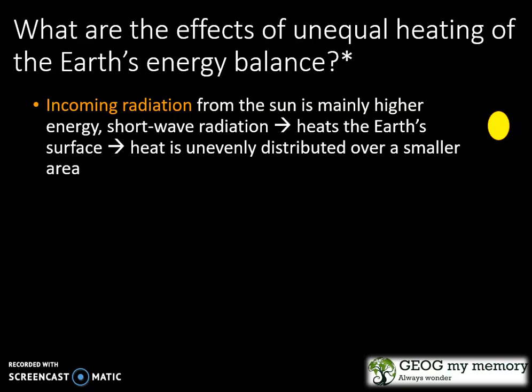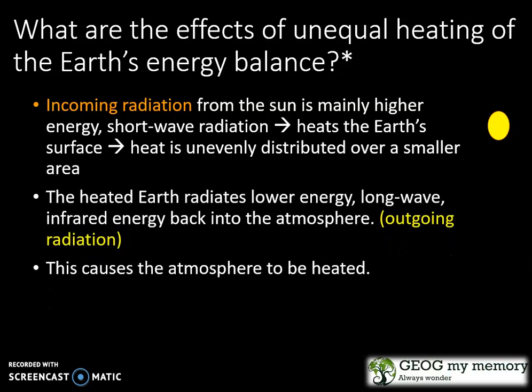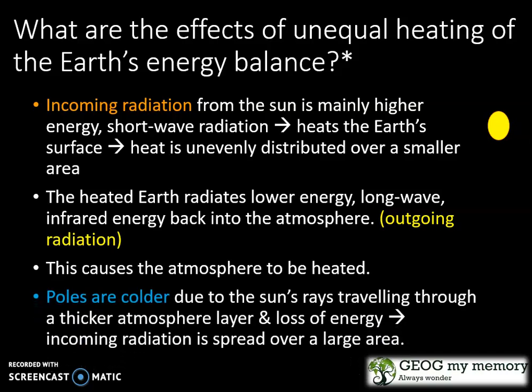What are the effects of unequal heating of the Earth's energy balance? You have incoming radiation from the sun, which is mainly higher energy shortwave radiation. This heats the Earth's surface and the heat is unevenly distributed over a smaller area. The heated Earth radiates lower energy longwave infrared energy back into the atmosphere — this is known as outgoing radiation. This causes the atmosphere to be heated. The poles are colder due to the sun's rays traveling through a thicker atmosphere and causing a loss of energy, and the incoming radiation is spread over a large area.